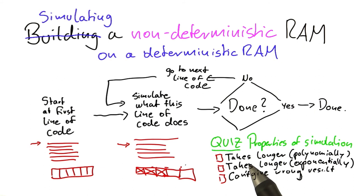the original algorithm would run in O of n squared time, then the simulation would run in O of n to the power of 4 time, something like that. Does it take longer exponentially, maybe?